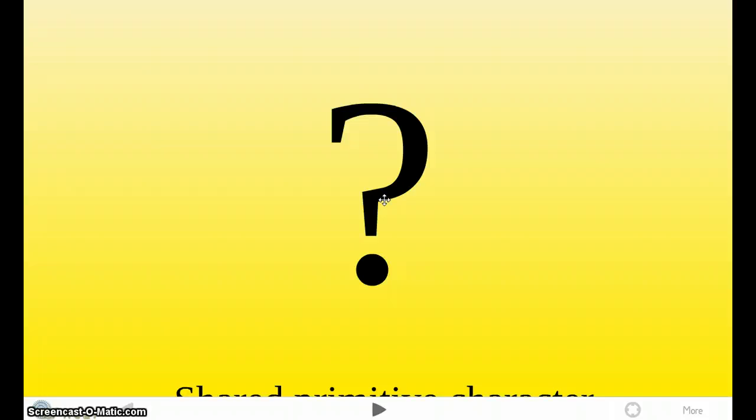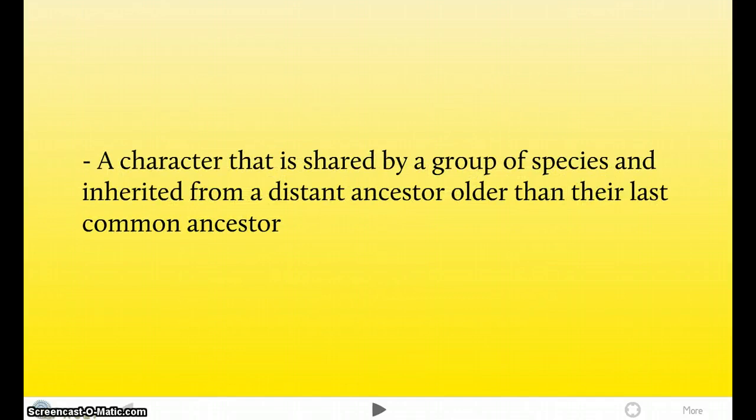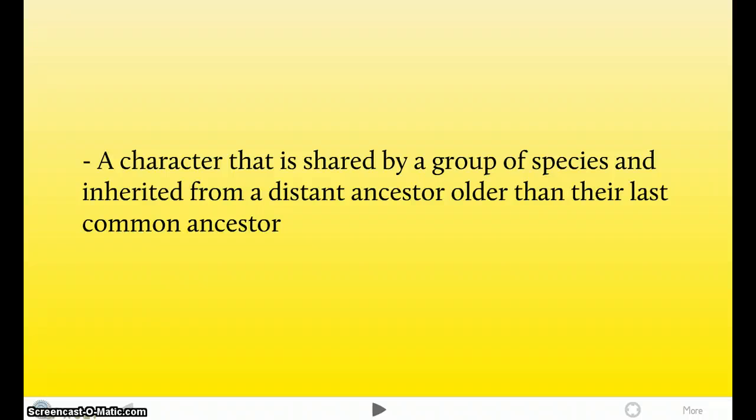I know you guys are a little confused. I'm going to tell you two more terms, and then I'll incorporate everything we just learned so far into a diagram. So this first term is called the Shared Primitive Character, scientifically known as the Simple Isomorphic. A Shared Primitive Character is a character that is shared by a group of species and inherited from a distant ancestor, older than their last common ancestor.